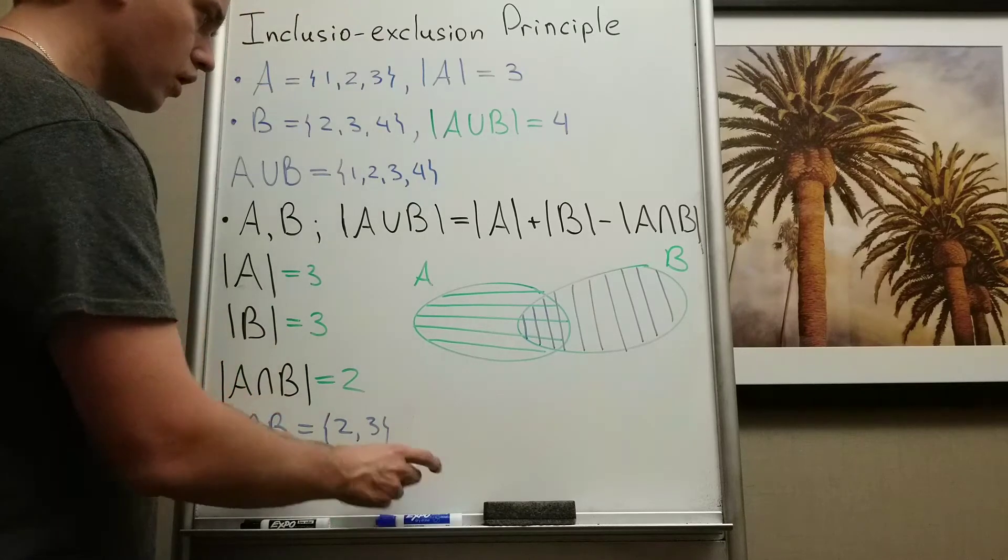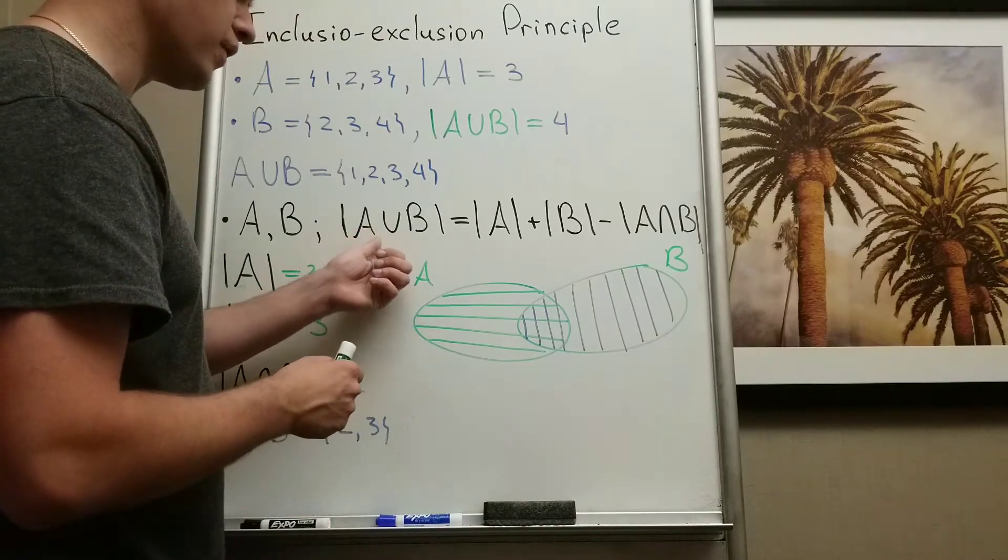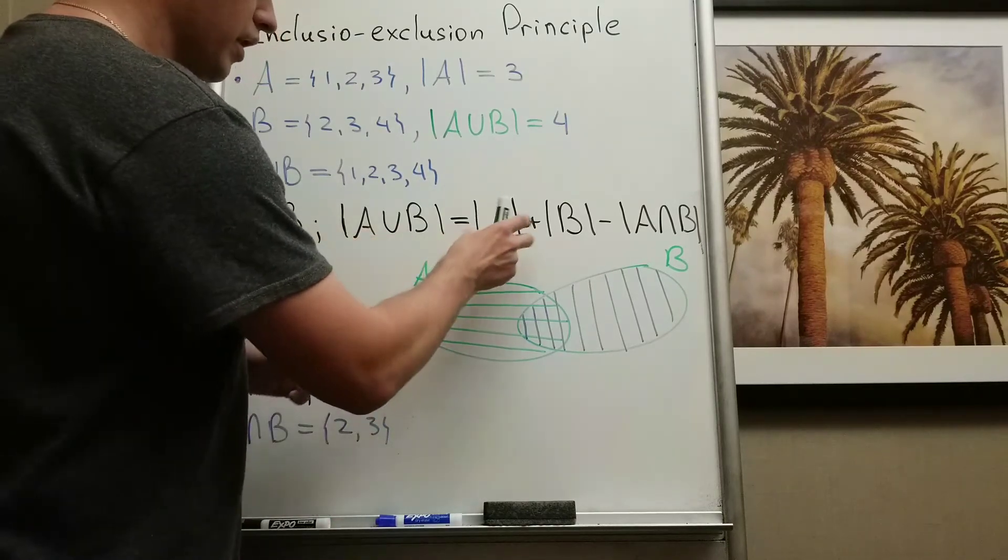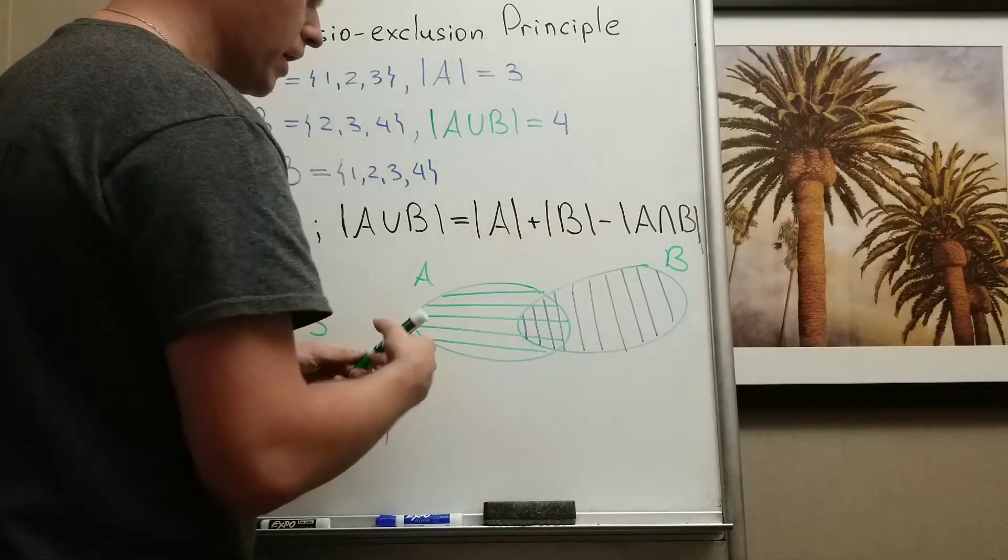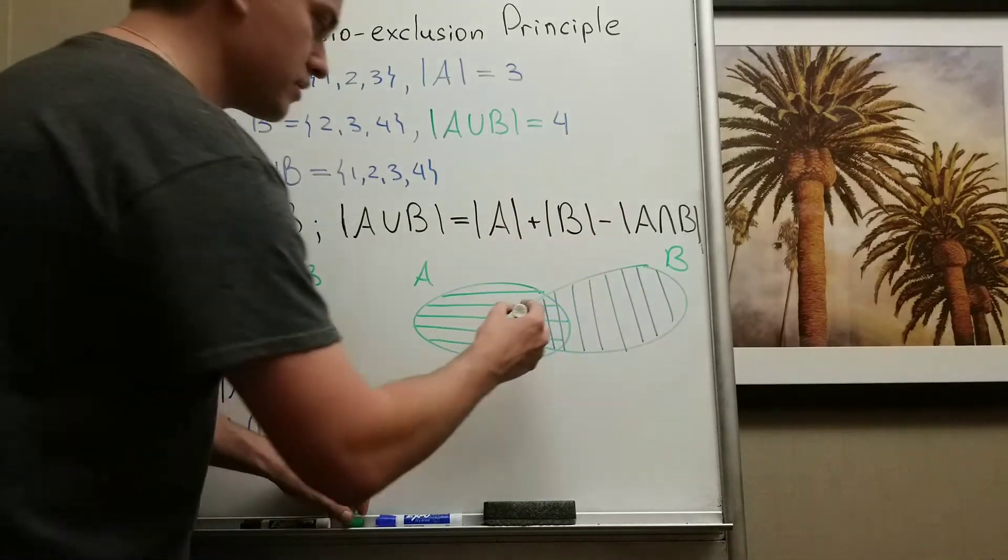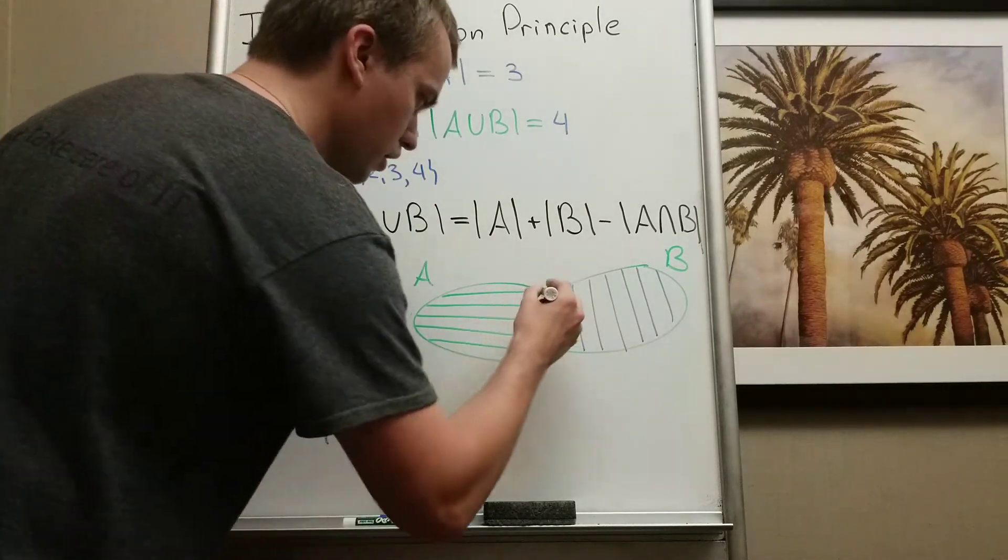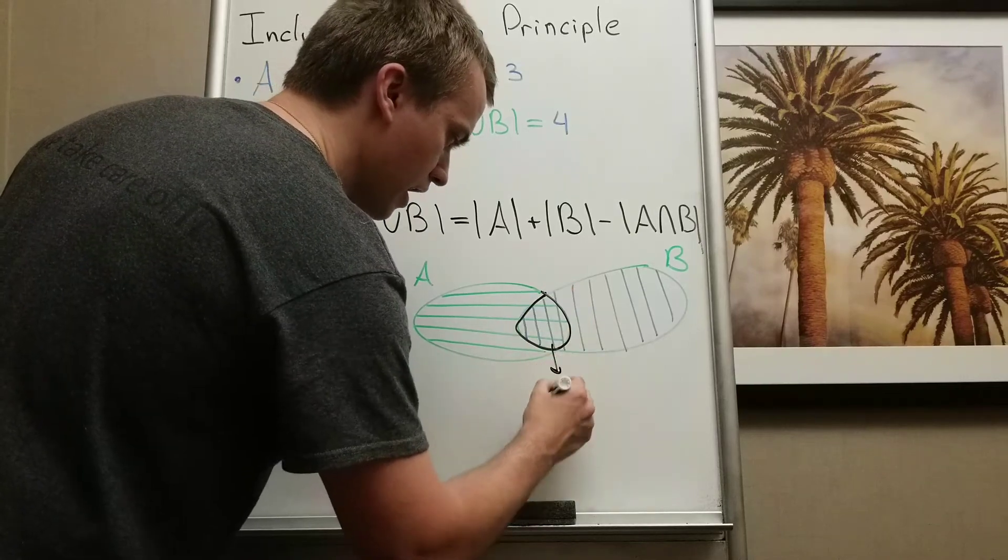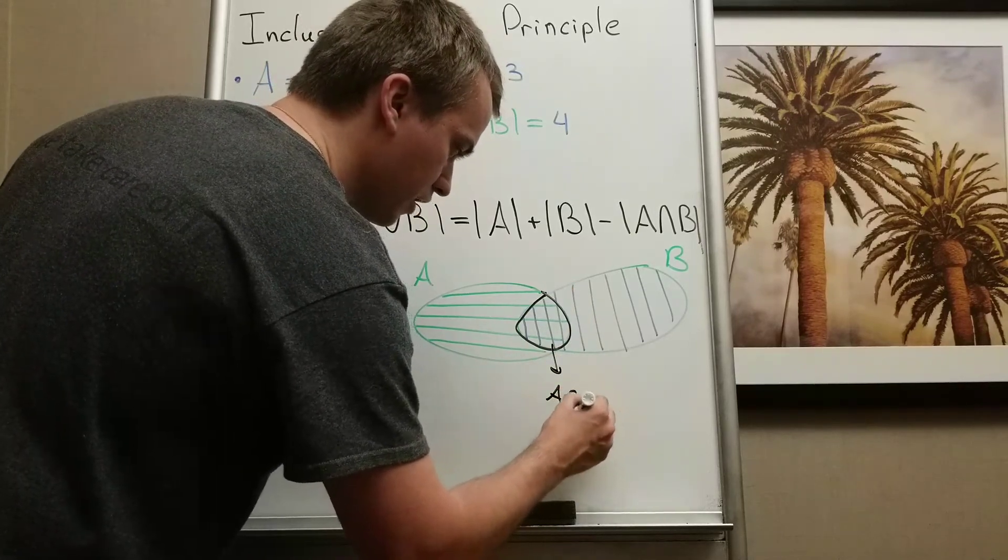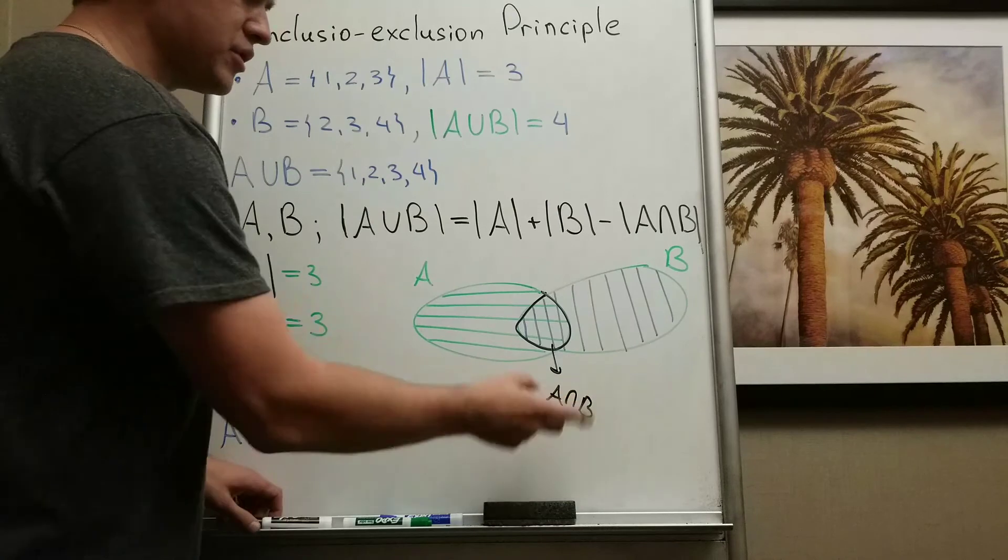And the cardinality of A union B is going to be the combination of green lines and blue lines. But you can see, when you're counting your cardinality of A and B, so cardinality of A is green lines, cardinality of B is blue ones. But when you're counting the number of elements, you can see that this region, which is exactly A intersection B, you count these elements two times.